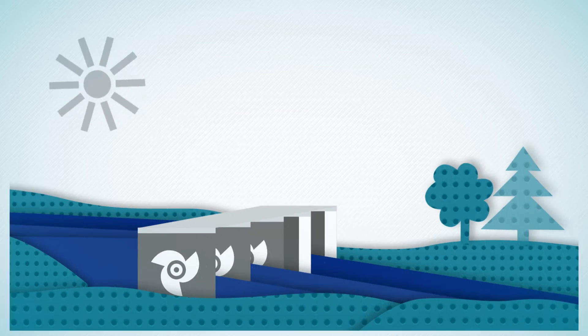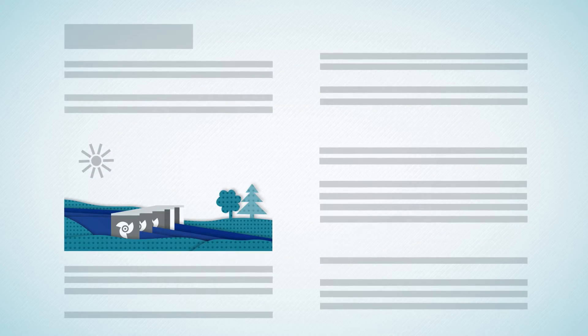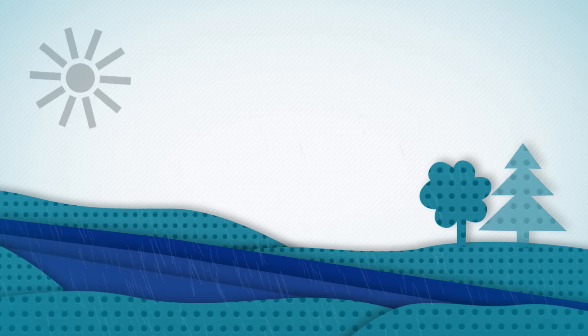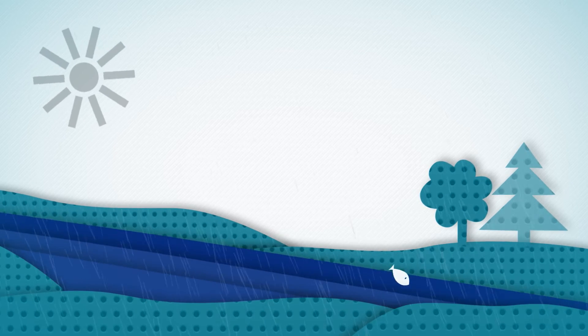During the permit procedure for a run-of-river power plant, great care is taken to ensure that the river's natural state, that is, the state before the construction of the power plant, is altered as little as possible.